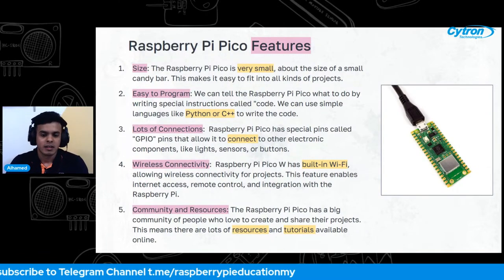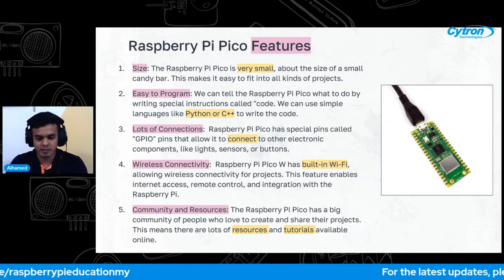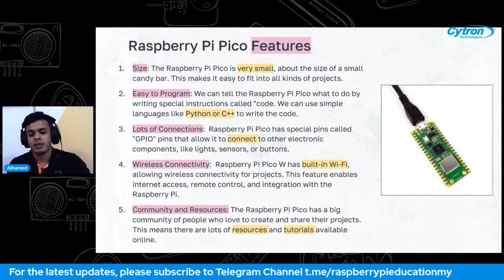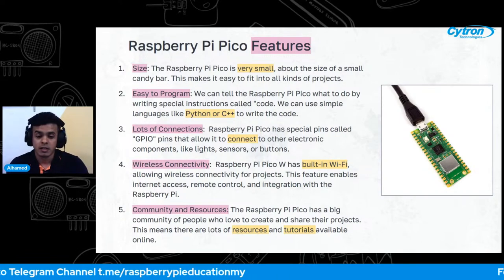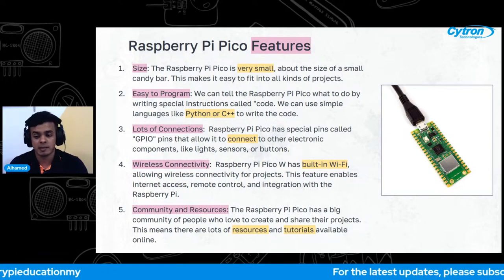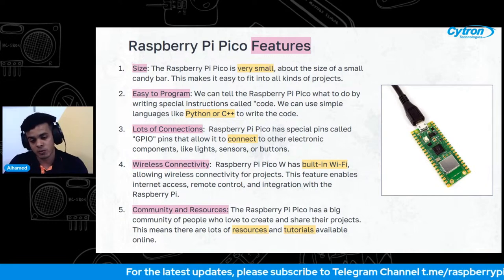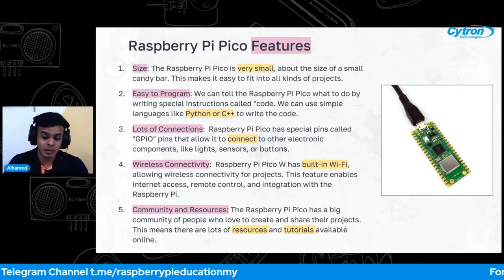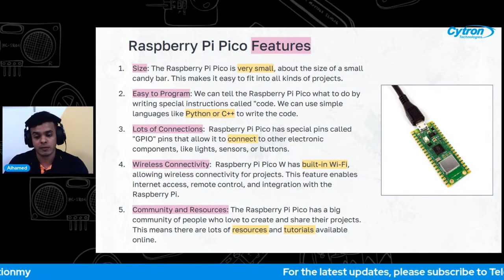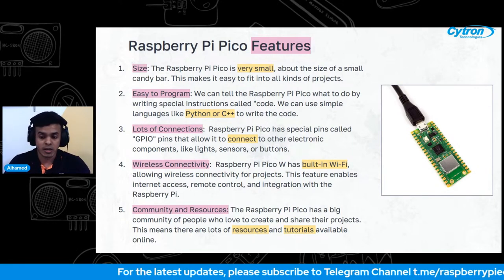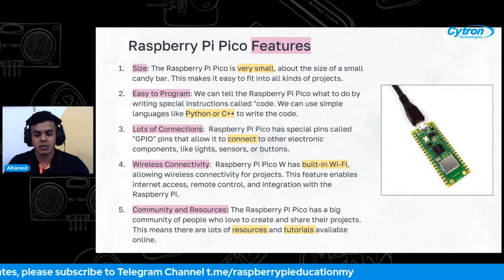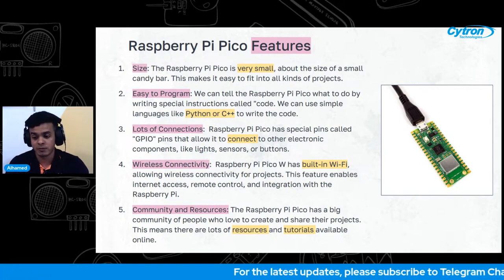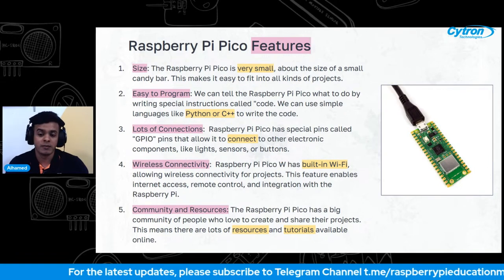The Raspberry Pi Pico is equipped with special pins called GPIO pins, which allow it to connect and communicate with components such as lights, sensors, or buttons. Another special feature is wireless connectivity — for those using the Raspberry Pi Pico W, it has built-in Wi-Fi. This means the Pico can connect to the internet wirelessly. You can control your projects remotely — imagine creating a smart home project that can be controlled from your smartphone, all made possible by the Wi-Fi feature on the Pico W.